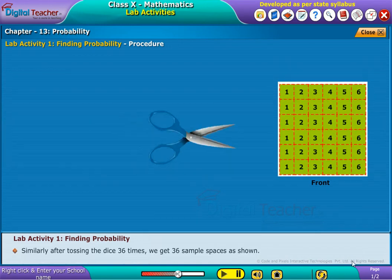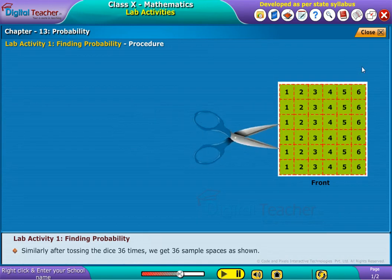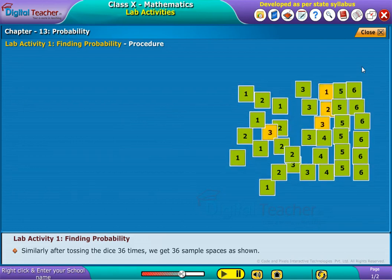Similarly, after tossing the dice 36 times, we get 36 sample spaces as shown.